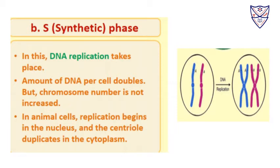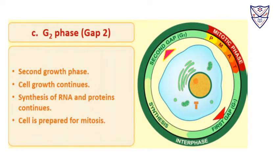Next is the G2 phase, the second growth phase. Here cell growth continues to increase. There is synthesis of RNA and protein, which continues here as well, and the cell actually prepares itself for mitosis.